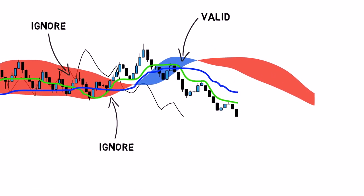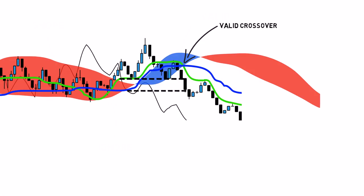Take a look here. The Tenkansen line has just crossed below the Kijunsen line, and the price is trading below the Kumo cloud, so it is a valid entry. However, the Chikospan is still trading above the cloud, so don't enter the market straight away. Wait until the Chikospan breaks below the cloud, and only then enter your trade.